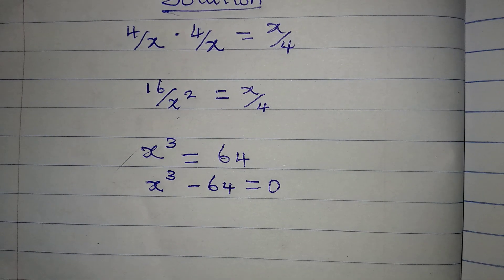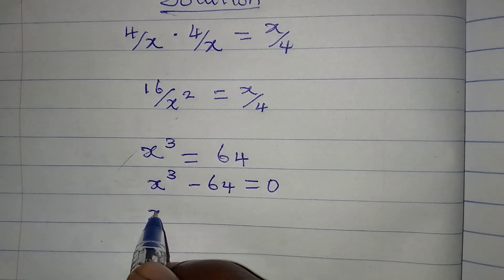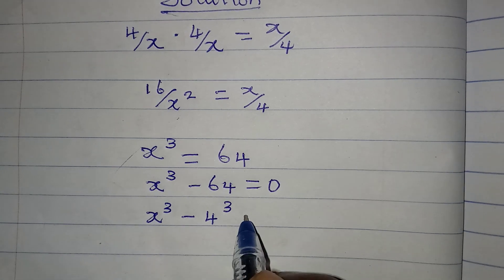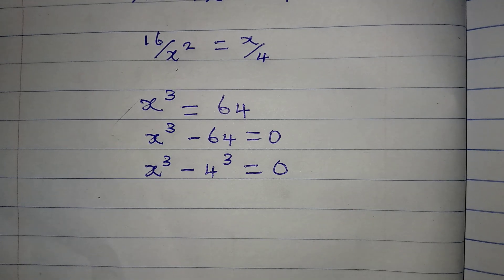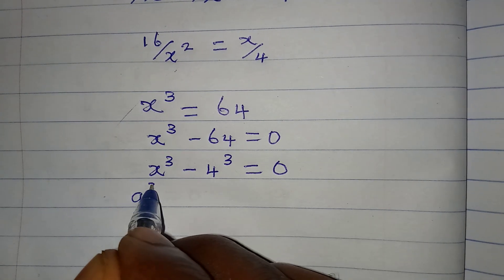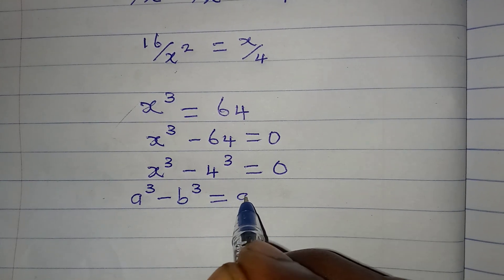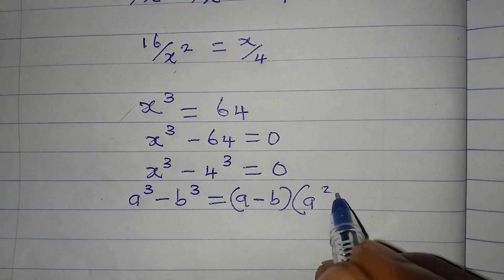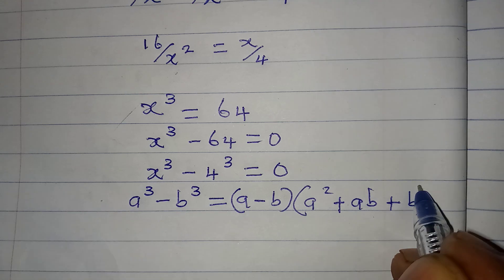Remember our target is to provide all the solutions. We have x to the power of 3 minus 64, where 64 is 4 to the power of 3, and this equals 0. Now let us use the standard identity: if you have a to the power of 3 minus b to the power of 3, then this is the same thing as (a minus b)(a squared plus ab plus b squared).